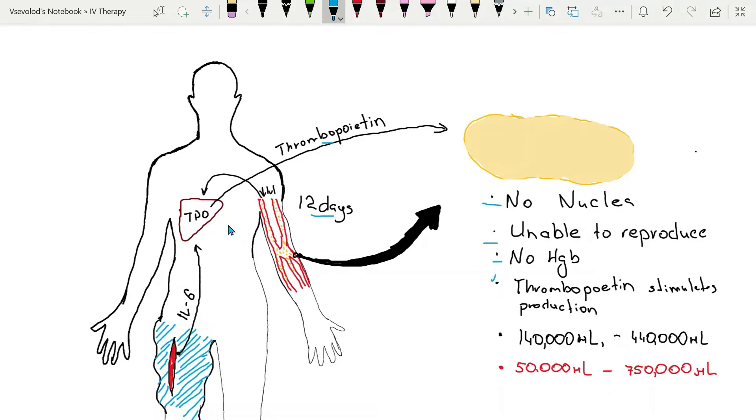It is synthesized by the liver. Severe liver disease will lead to thrombocytopenia, low amount of platelets.